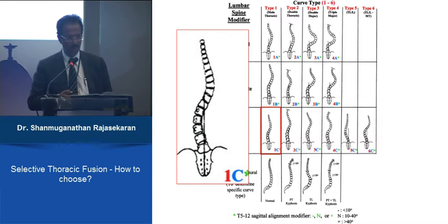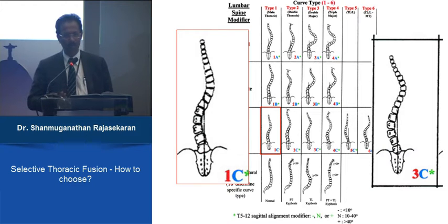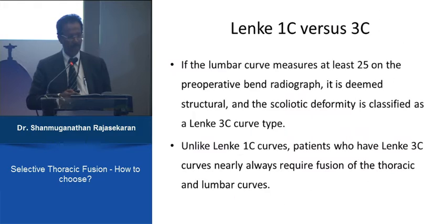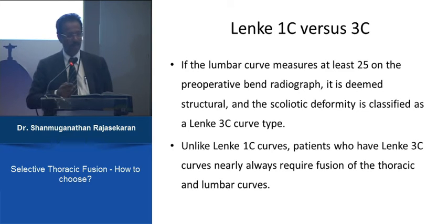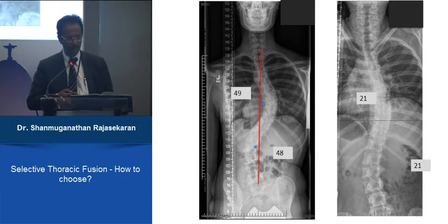A 1C curve and a 3C curve can look exactly the same on the primary radiograph — the difference comes from traction films and flexibility assessment. To determine whether the lumbar curve is structural, anything above 25 degrees on a bending film is considered structural. If the lumbar curve remains more than 25 degrees, it should be treated as a double major curve and selective thoracic fusion should not be performed.